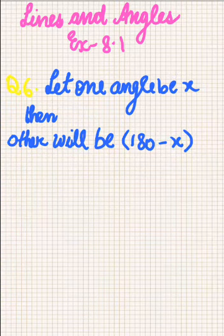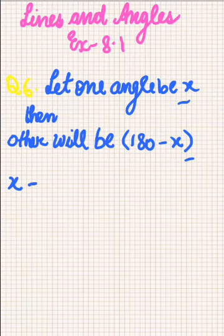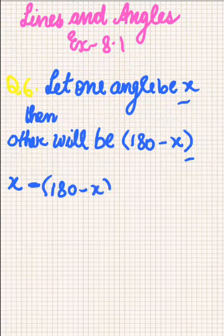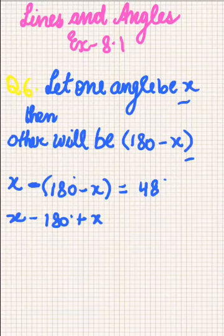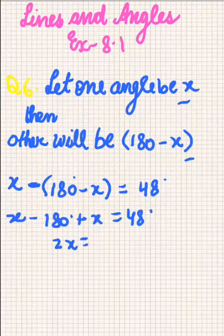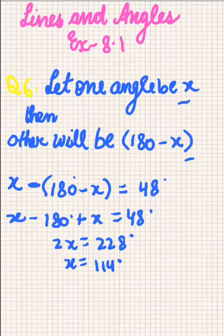We are already given the difference between these 2 supplementary angles, so we can equate this. The first will be X and the other — pay attention to the minus sign because it is a difference — so X minus (180 minus X). Don't forget to change the signs, equal to 48 degrees. So X minus 180 plus X equals 48 degrees, giving us 2X equal to 228 degrees.